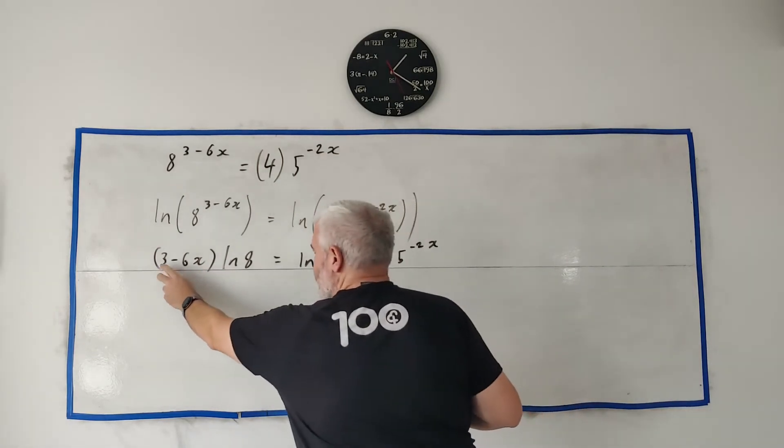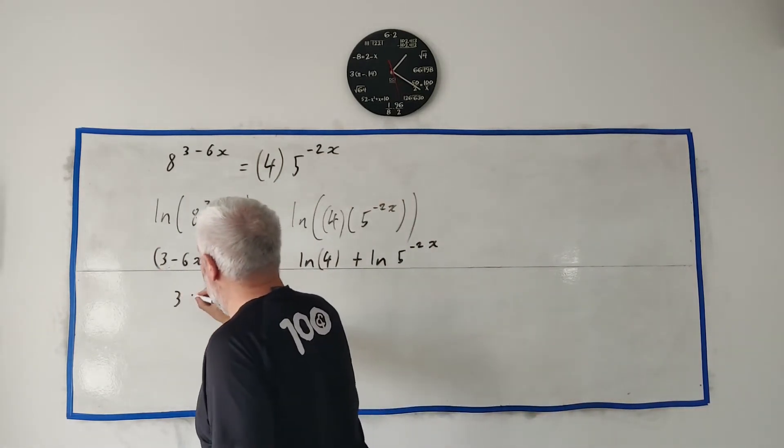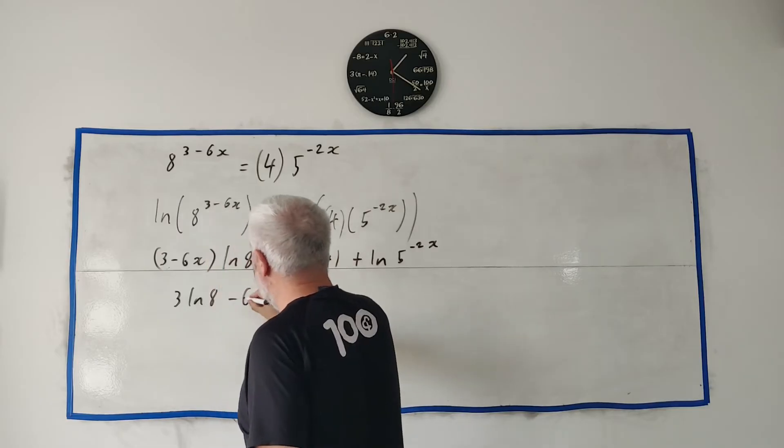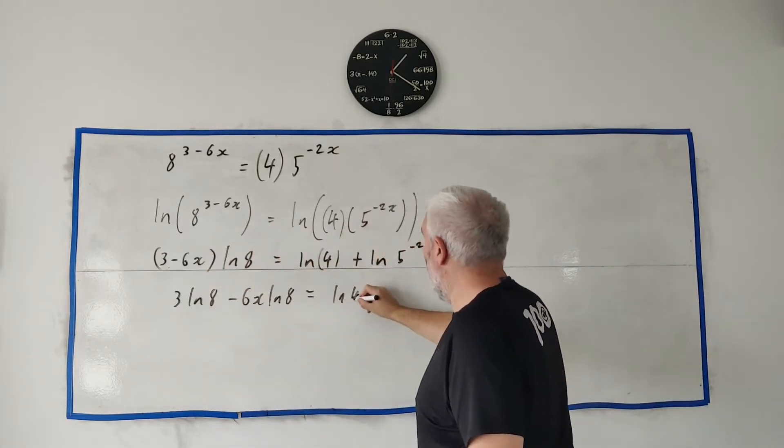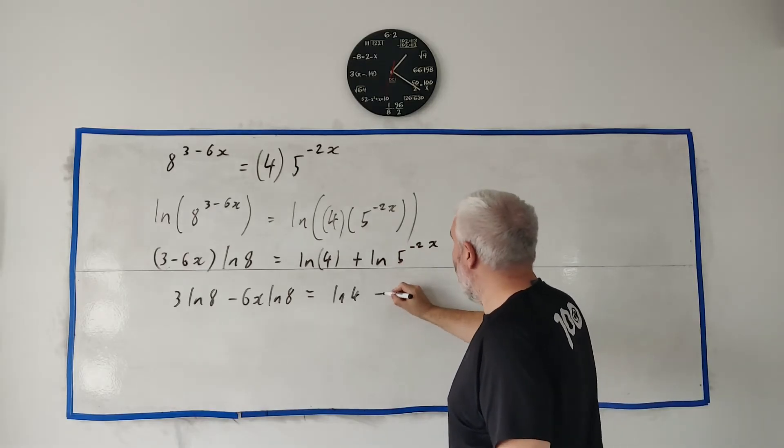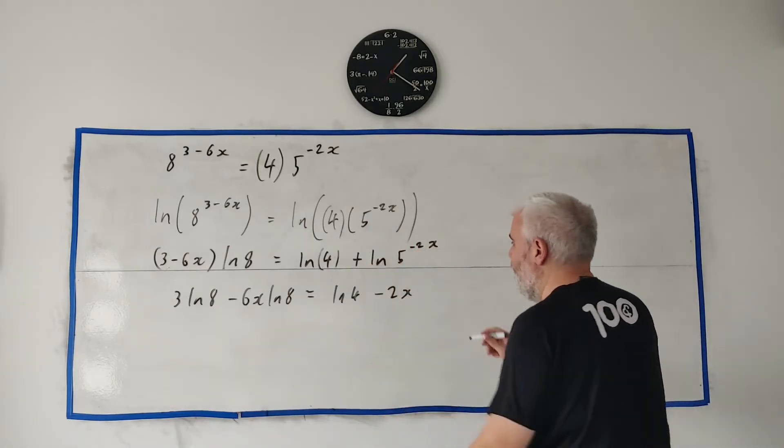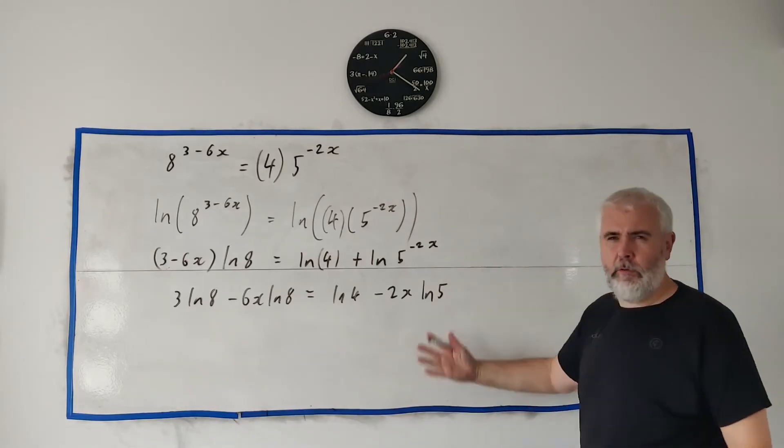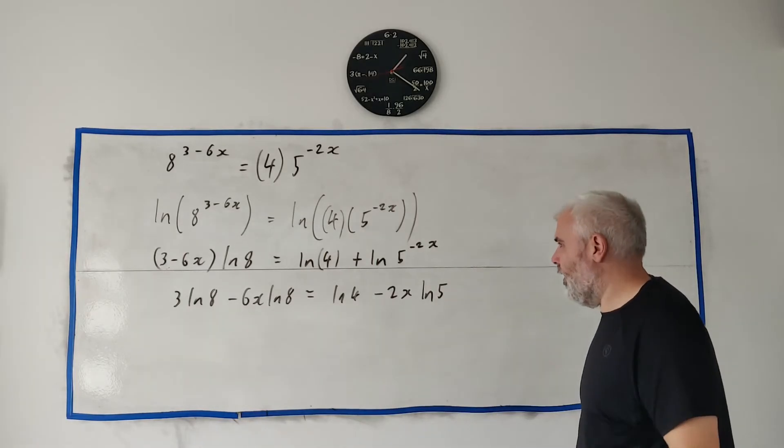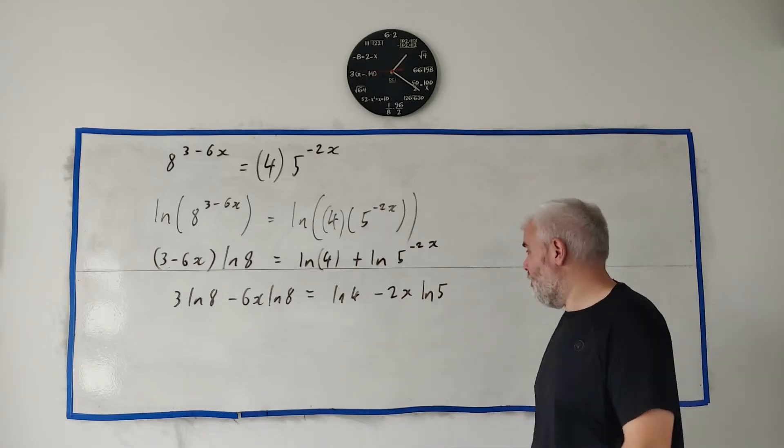So let's start cleaning up some of this. 3 times natural log 8, 3 natural log 8 minus 6x natural log 8 is equal to natural log 4, and this will turn into minus 2x, this multiplies out front, natural log 5. Now we have a much easier time of it here.